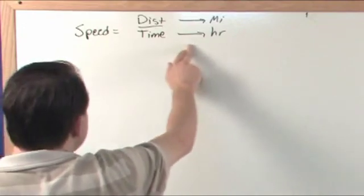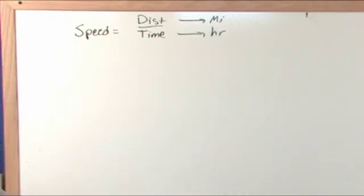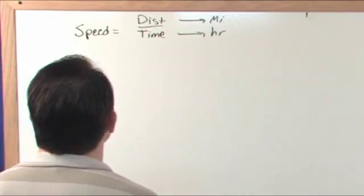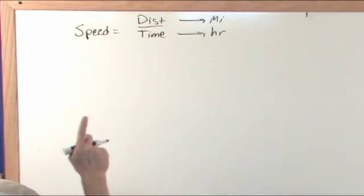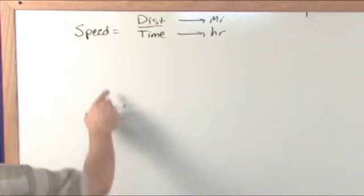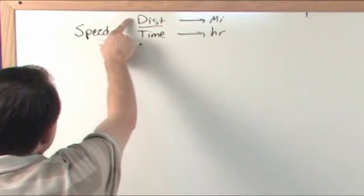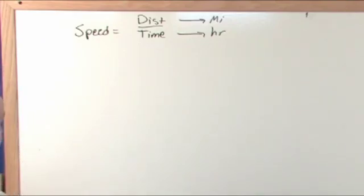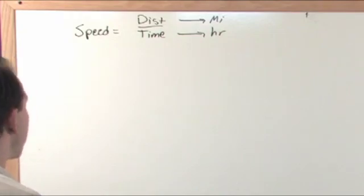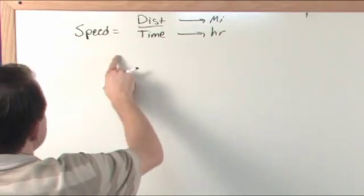A lot of times in these problems, you'll have to deal with the speed, but you'll also want to deal with the distance. I'm not going to tell you why now because it'll just confuse you—we'll work some problems. But if you needed to deal with distance, you could just solve this equation. This is an equation like anything else. If you want to solve for distance, you can do that. If you want to solve for time, you can do that. So if you wanted to solve for distance, how would you do that?